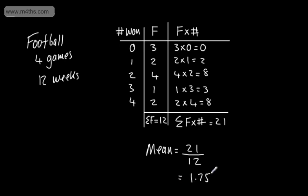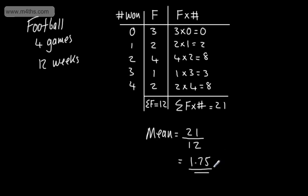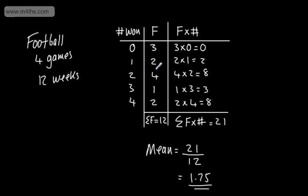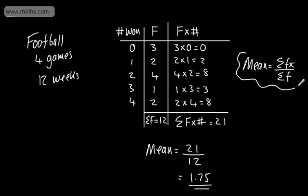So 1.75 — that's the actual answer. On average, I've won 1.75 games per week. To find the mean from the table, it's the sum of frequency multiplied by x, over the sum of the frequency. We multiply, then we divide. What we have here are discrete values. Now we're going to look at an estimated mean from a table when we have grouped data.